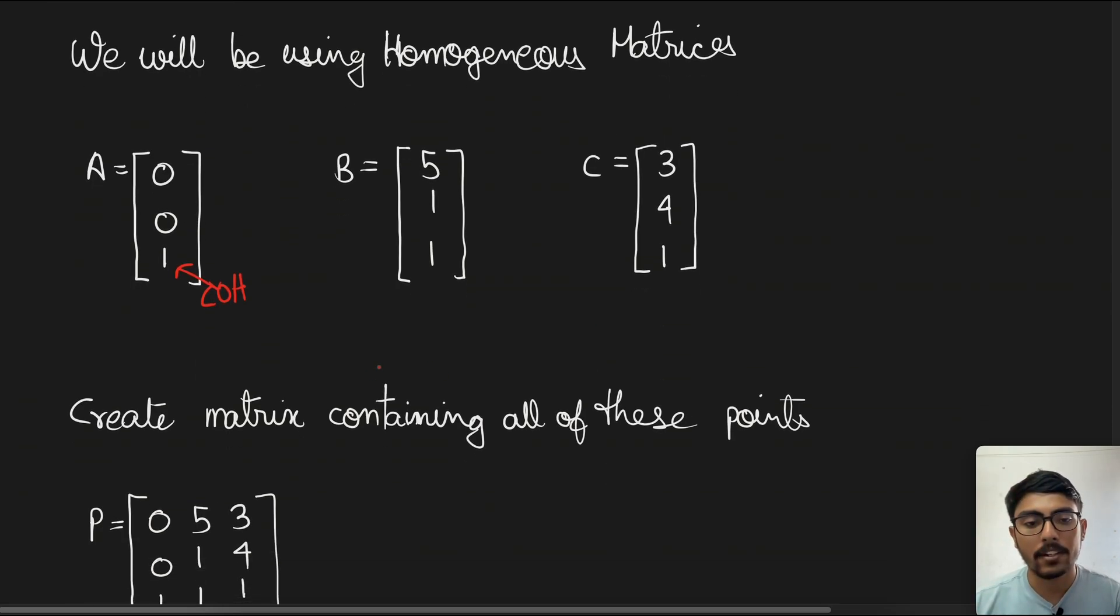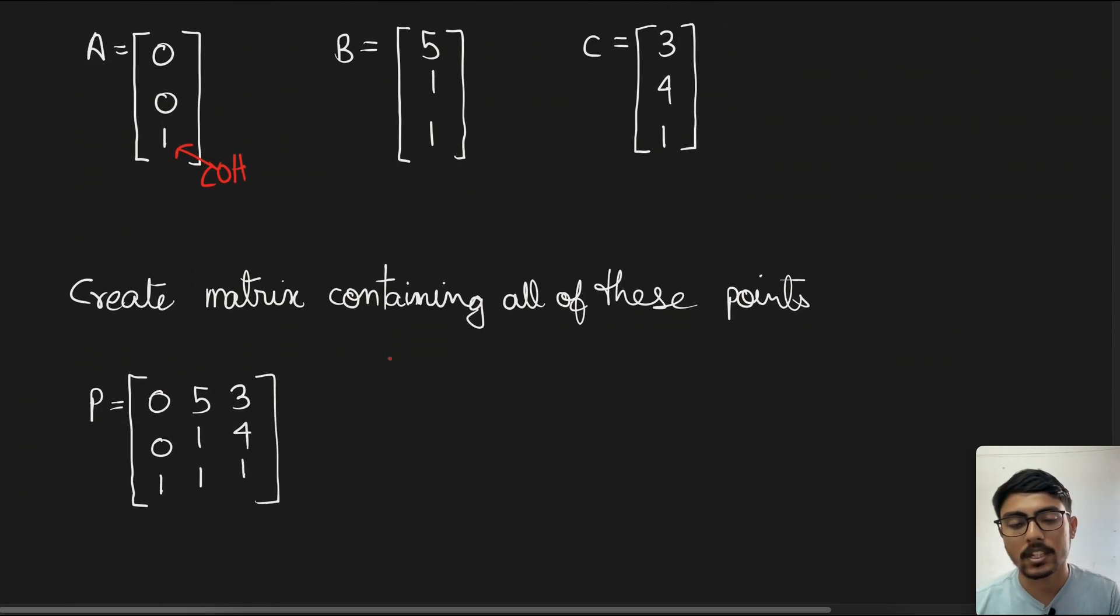Next, we create a matrix containing all these points. In that case, as you see, the columns are denoting the respective points.